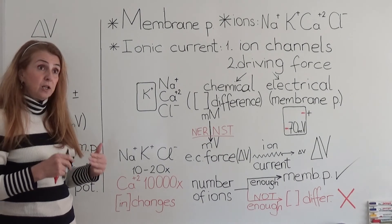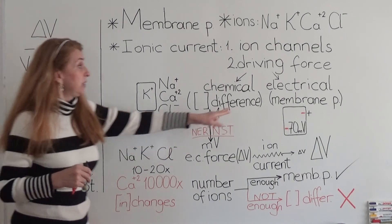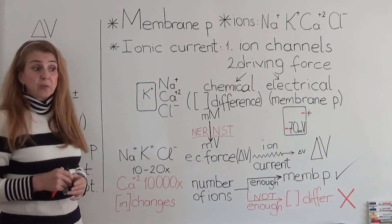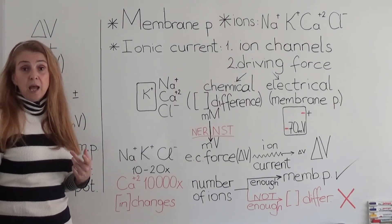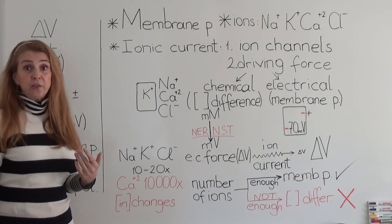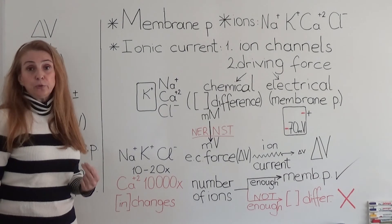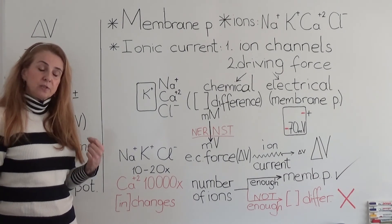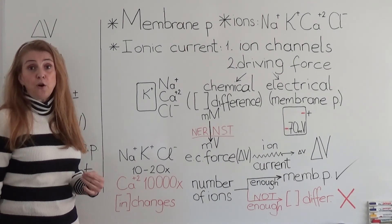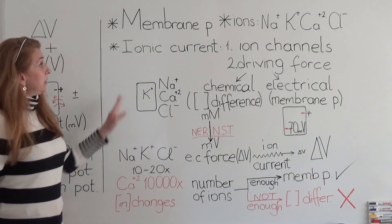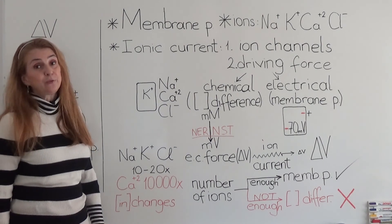Calcium therefore has two effects. First, by the charges it carries when it enters the cell, it changes the electrical potential or membrane potential. Second, because its intracellular concentration increases, it also has a chemical effect. For example, in muscle cells, the calcium that enters the cell triggers muscle contraction. Another example is at the synapse between two neurons: the concentration of calcium in the presynaptic cell increases at the axon terminal, helping to trigger the release of neurotransmitter. These are the important highlights we always have to keep in mind when talking about bioelectrical potentials.